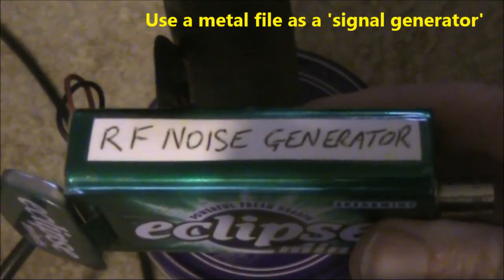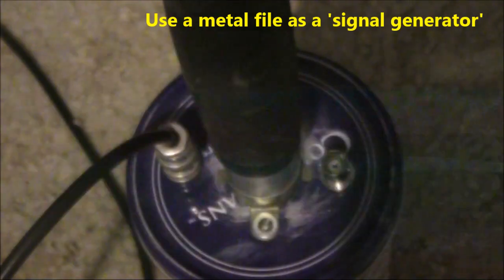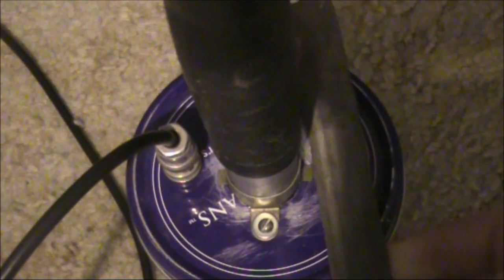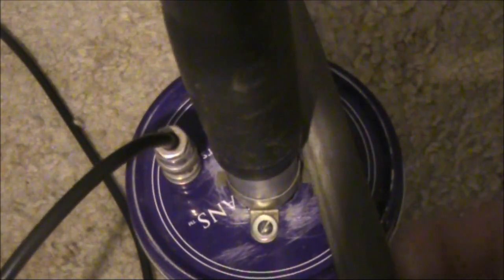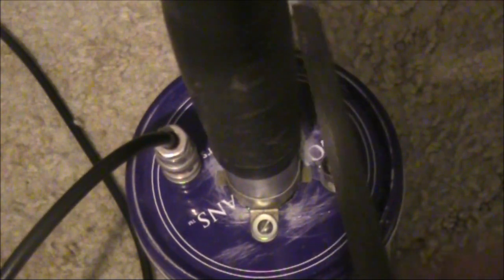What if you don't have an RF noise generator like this? What you could do is just get a file like this and run it along the outside of the antenna socket, or you could just tap it with a screwdriver.